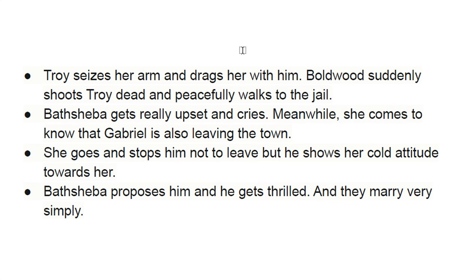Troy seizes Bathsheba's arm and drags her away, but Boldwood suddenly shoots Troy dead, infuriated by Troy's behavior towards Bathsheba. Boldwood peacefully walks to the Casterbridge Market jail. Bathsheba gets really upset and cries. Meanwhile, she comes to know that Gabriel is also leaving the town. She goes and stops him, asking him not to leave, but he shows a cool attitude towards her. Bathsheba proposes to him, and they get engaged and marry very simply in the presence of a few witnesses.